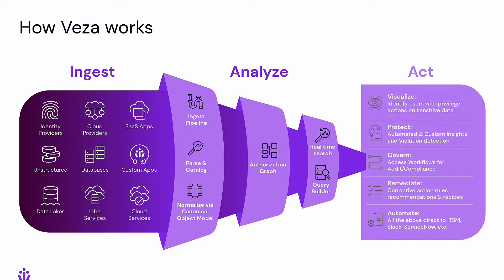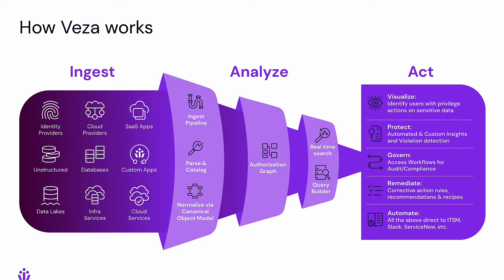This model drives our authorization graph and allows VESA to query all data permissions across all of your data resources. Using this information, customers develop insights into access trends, service violations against least-privileged best practices, and create workflows for governance and compliance. VESA will constantly monitor your state of authorization and streamline remediation by integrating webhooks with ITSM and notification tools.